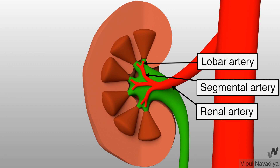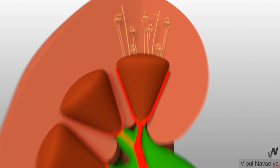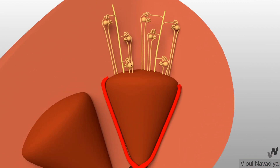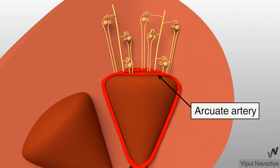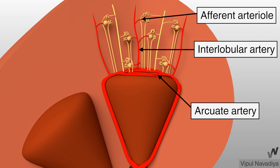Usually there is one lobar artery for each pyramid. Lobar arteries further divide into interlobar arteries, which run in between the pyramids. Then they divide into arcuate arteries, which run along the base of the pyramid. They give origin to interlobular arteries, which go towards the periphery. Afferent arterioles arise from the interlobular arteries and enter into the renal corpuscle of respective nephrons.